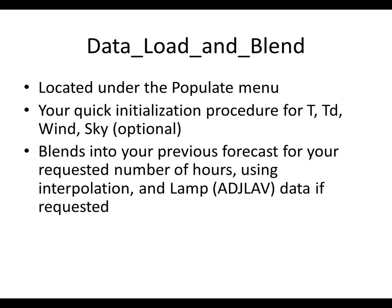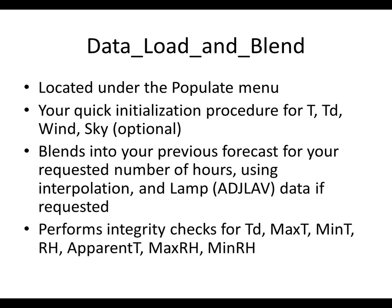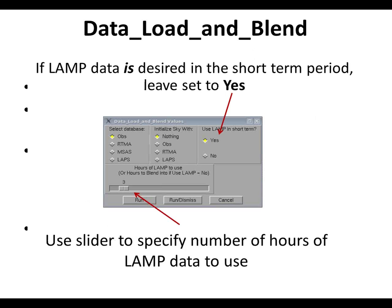You can also throw in lab data from the adjusted lab database — there may be another tech order for setting that up. The tool does a whole ton of integrity checks for dew point, max/min temperatures, RH, apparent temperature, max RH, and min RH. The GUI shows options to select your database and what to load from. If you're coming out of backup mode and don't have the OBS database, you can switch to something like MSAS or RTMA to get something in there.